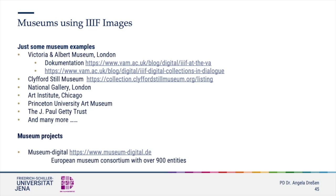The same goes obviously for the museum sector, including the Victoria and Albert Museum and the National Gallery in London, the Art Institute in Chicago, the Getty Institute in Los Angeles, and many more. The spirit of sharing and availability does not exclude small museums. Museum Digital is a small project including over 900 smaller museums, many in Germany but not only. They offer a shared catalog and access, which otherwise would have been difficult to deal with for the single institution.